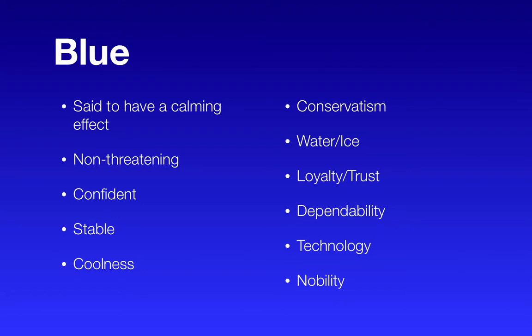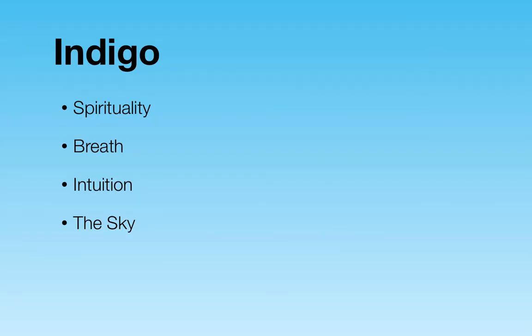Blue is said to have a calming effect — it's non-threatening, confident, and stable. It represents coolness, conservatism, water and ice, loyalty and trust, dependability, technology, and nobility. Indigo is said to represent spirituality, breath, intuition, and the sky.